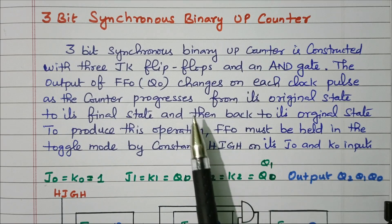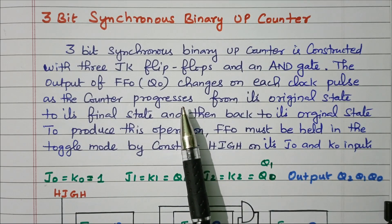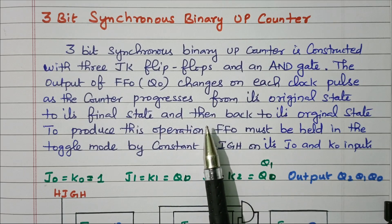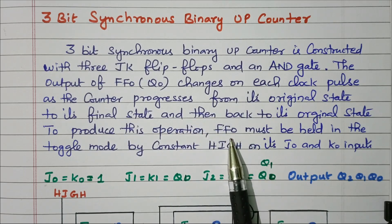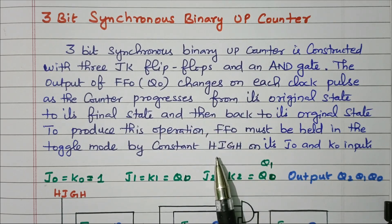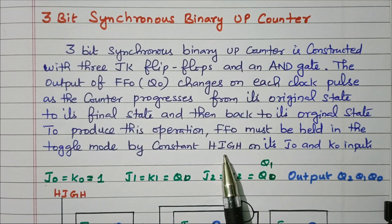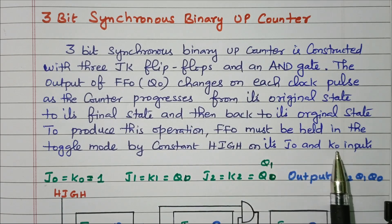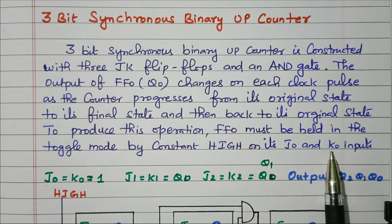The state should change from 0 to 1 and 1 to 0 continuously. In order to obtain this, the first flip-flop is connected with logic high for both J0 and K0, so that we are getting toggle — the output is continuously toggling.